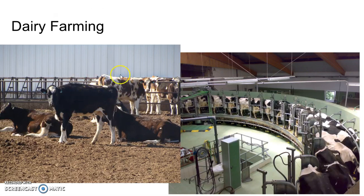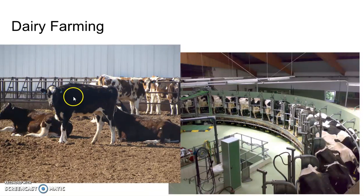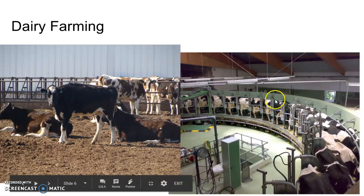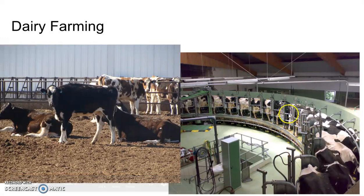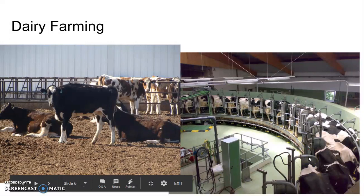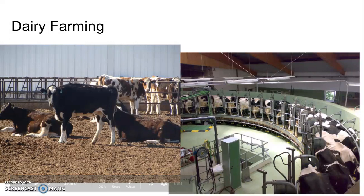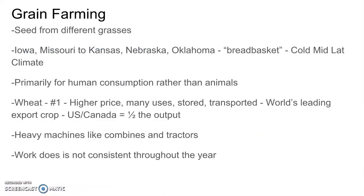Dairy farming is difficult in order to make significant profits. Dairy farms are highly mechanized now — cows go outside some of the time, but milking is no longer done by hand; it's all done by machine.